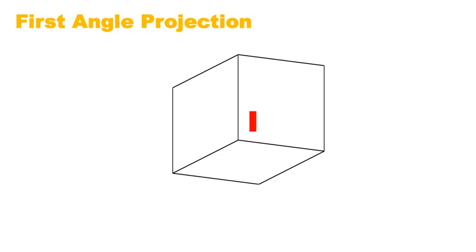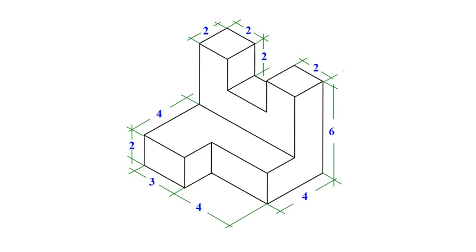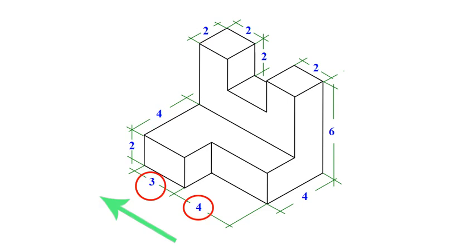To make it clear, we'll take an example of a 3D object with height 6 units, width 6 units, and depth 7 units, and see how its three views are arranged in first angle projection. So, let's get started.